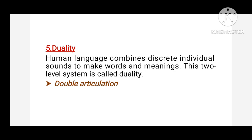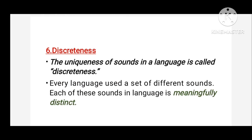This property of human language is called duality, which is also known as double articulation. The sixth property is discreteness. Discreteness refers to the uniqueness of sounds in a language. Har language mein bahut saari sounds hoti hain aur yeh saari sounds ek doosri se different hoti hain.